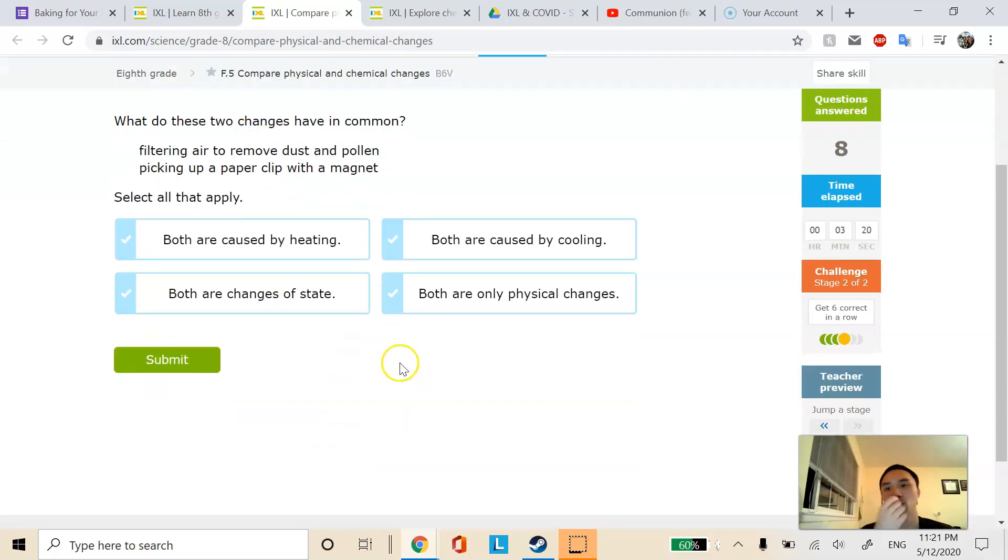And then what do these two changes have in common? Filtering air to remove dust. This is just a mixture separation. So that's just a physical change. Picking up a paper clip with a magnet is also just a physical change. Both of these are not involving changes of state of matter. They're just filtration or separating. So I would just pick that one only.